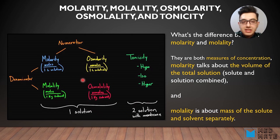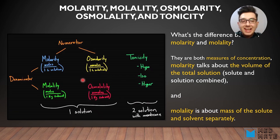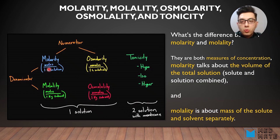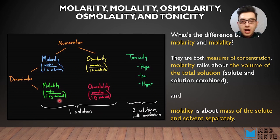Molarity refers to the volume of the total solution — solute plus solvent combined — and molality refers to the mass of solute and solvent separately. When calculating molarity, we put moles over one liter of solution. When talking about molality, we put moles over one kilogram of solvent, not solution.